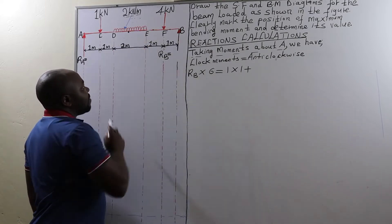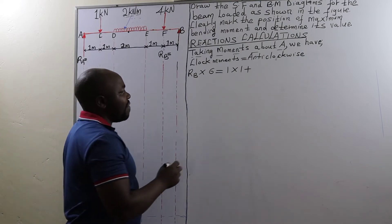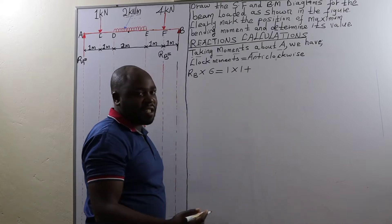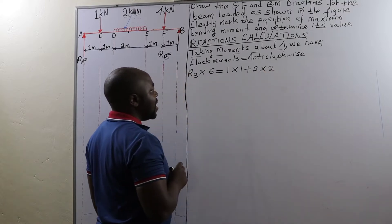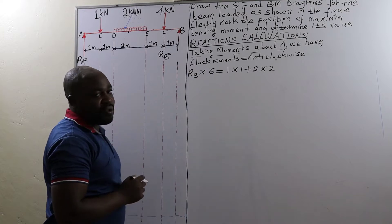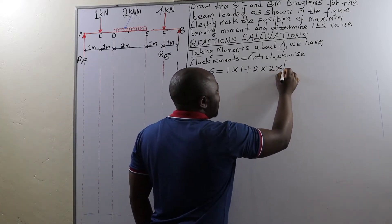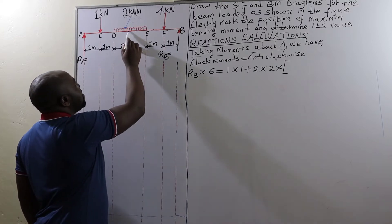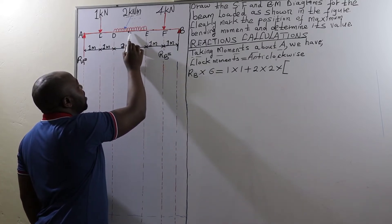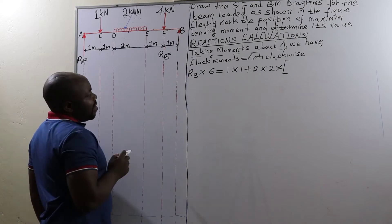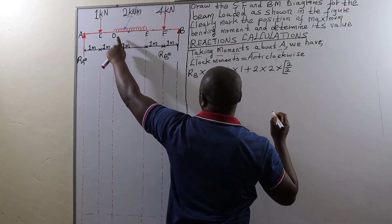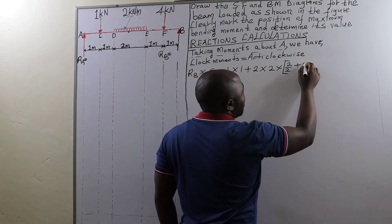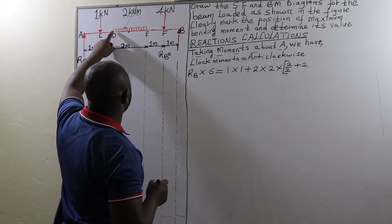Between point E and point D we have a uniformly distributed load, and therefore we are going to convert it to a point load by multiplying its value by the span in which it is distributed — that is from E to D, which is 2 meters. Then we multiply by the distance from the center of section E to D, which is 2 meters divided by 2, all the way to A. So this is 2 divided by 2, then you add 2 meters — the distance from point D to point A.